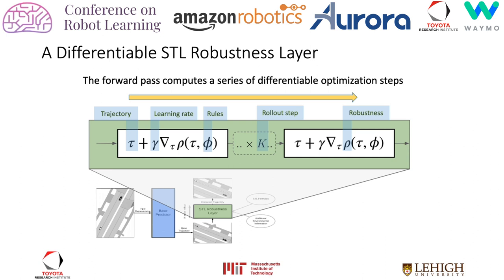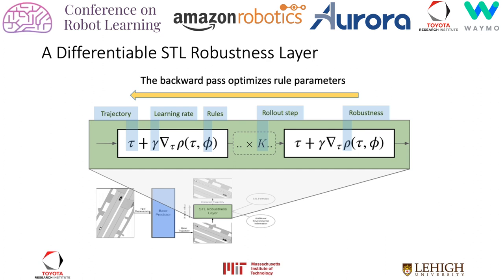In practice, instead of optimizing directly for the robustness, we can optimize for a set of controls and use a dynamics model to calculate the trajectory. This can give us more dynamically feasible predictions. Recall that the basic elements of the rules are predicates, which are inequalities of real-valued functions. We set the thresholds of the predicates as rule parameters. These parameters can be optimized in a backward pass. For example, the rule 'stay close to the center line' can be expressed as the distance between the agent and the center line bounded by a threshold. Setting this threshold too high reduces the influence of the rule on prediction, whereas setting it too low puts too much restriction on prediction and reduces flexibility. Manual tuning of these parameters can be tedious. Our method allows for automatic optimization of these rule parameters as part of the backward pass.